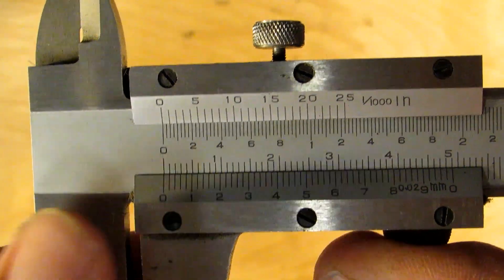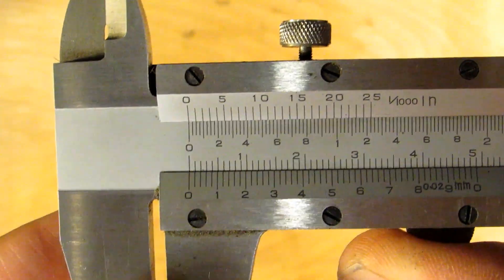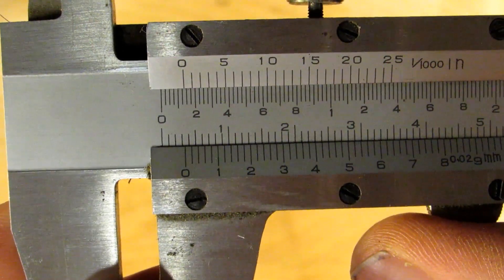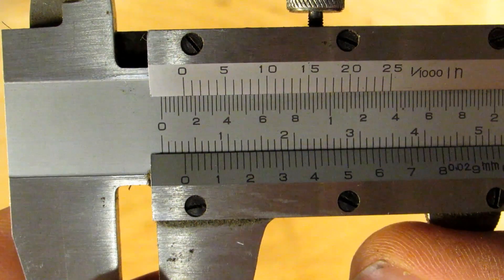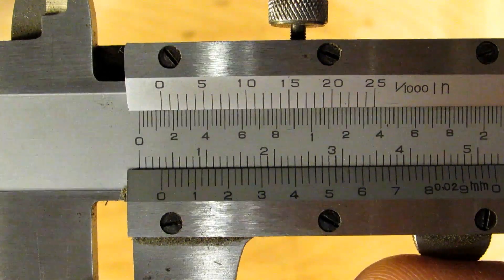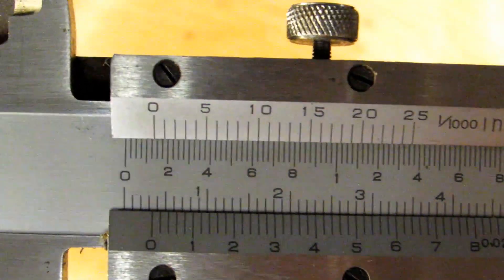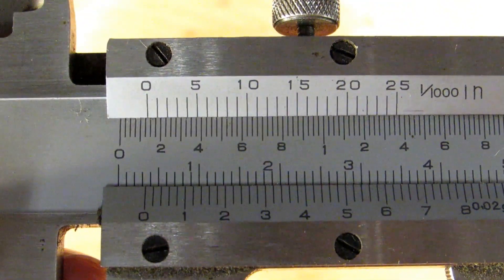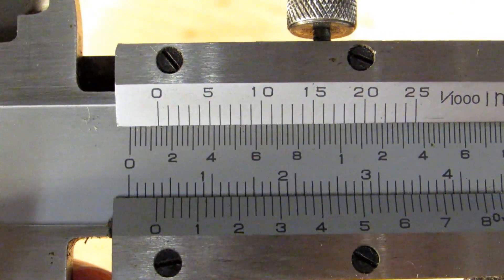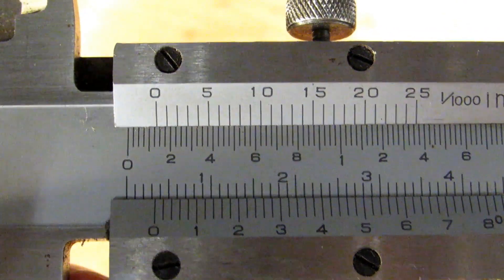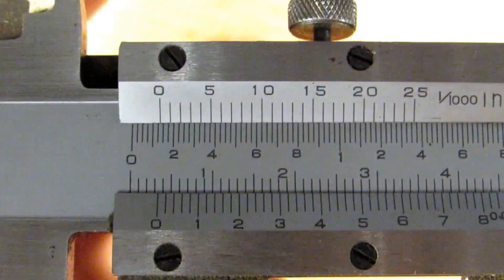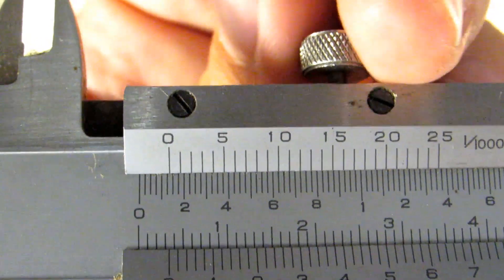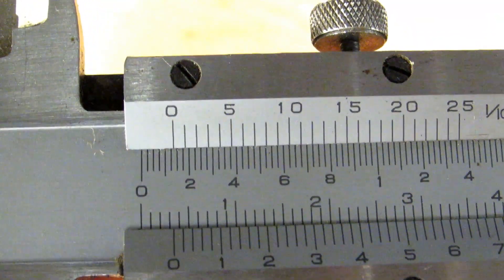So the way that works is you're paying attention to where the zero is on the vernier scale. So let's say I was up this way. Well you can see I'm past the one hundred twenty-five thousandths mark and then you would have to find which one of these marks lines up with the line on the main scale. Now these are a little hard to see on camera but if you were seeing this in person the ten thousandths graduation on the vernier scale over here is the one that's lined up which means that we've got a hundred and thirty five thousandths of an inch showing on the caliper.